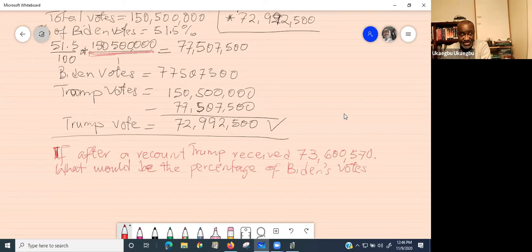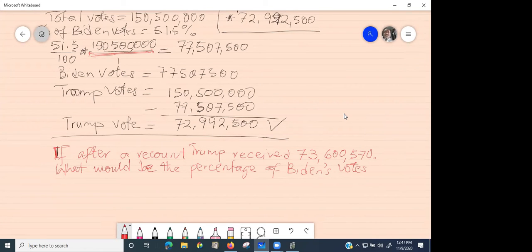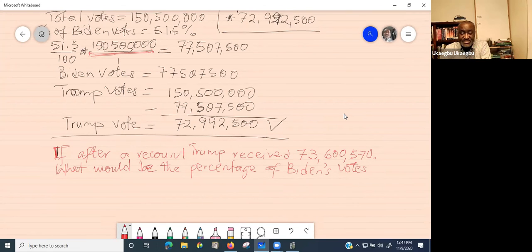We are still working on the total vote of 150,500,000. The total vote count is still the same. It's just that when they recounted it, some votes were given to Biden, some to Trump, and Trump's new number is 73,600,570. So the question becomes, what is that percentage that represents Biden now after a recount?